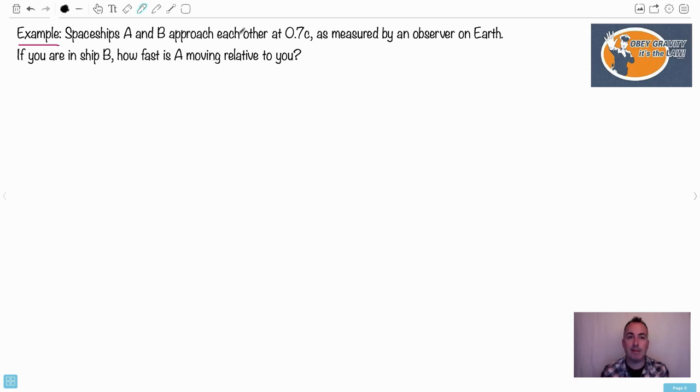We have spaceships A and B and they approach each other at 0.7C as measured by an observer on Earth. And right away before anything else, maybe it'll help to actually do a diagram. So here's Earth. So the observer is sitting on Earth right here. This is what they see. So they're going to see two spaceships. Maybe I'll draw a spaceship here. I'm not very good at drawing, clearly. So this is this person right here. And we're going to have another spaceship right here coming to us.